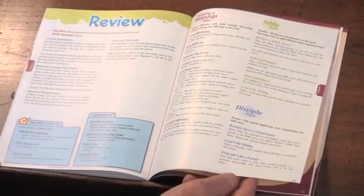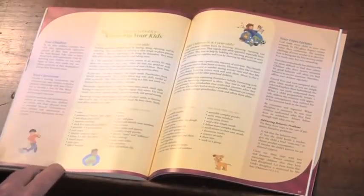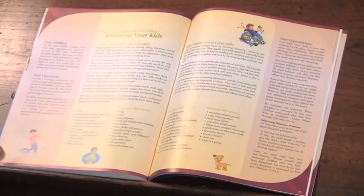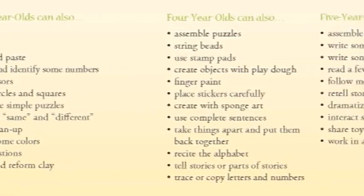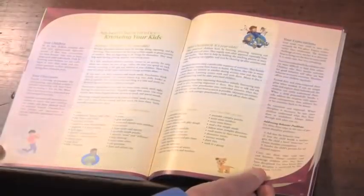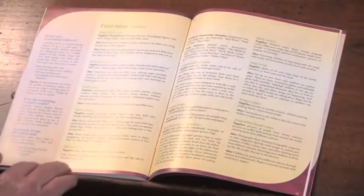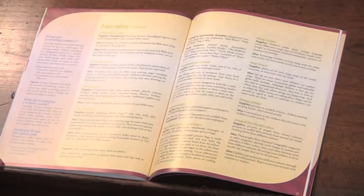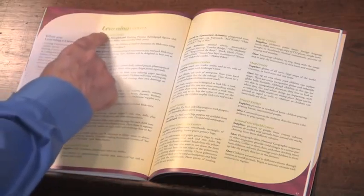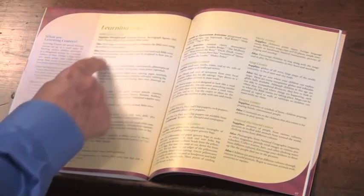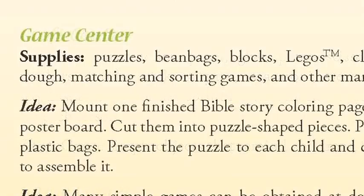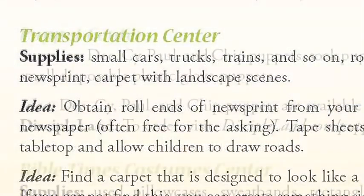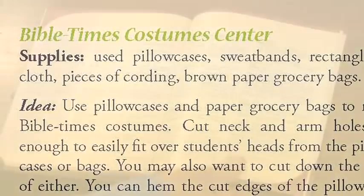Following that 13th lesson, I want to focus your attention on some supplemental pages. We give you a lot of great information like age-level characteristics so that you know your kids — what their needs are, what they can do and can't do. Keep looking at these pages because we also give you some great ideas for learning centers. If you don't use learning centers, read this section and give it some consideration. The learning centers we point out here will give you multiple sites to set up in your classroom, and kids love them because it allows them to learn the way God made them to learn.